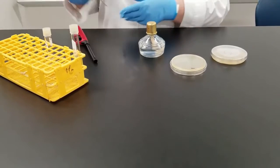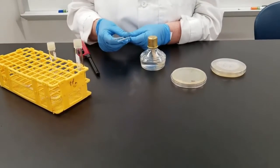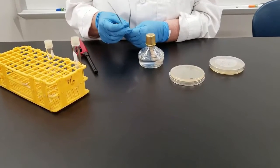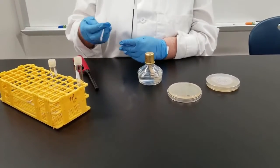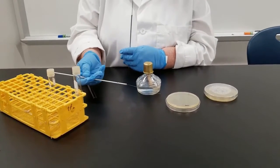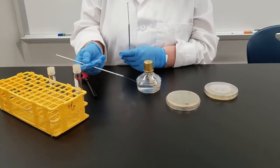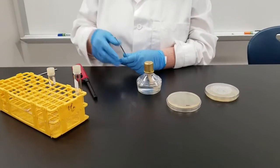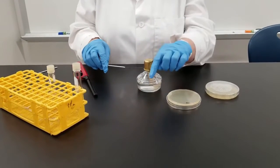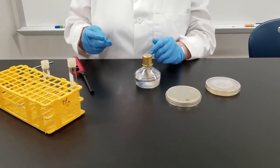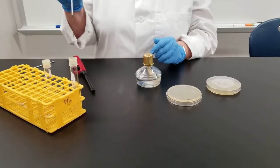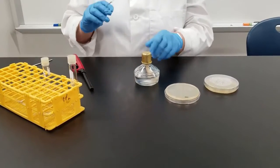Now we also have what we call our inoculating loops and needles. An inoculating needle is just a straight piece here. We don't use that quite as often. The thing we use most often will be the inoculating loop. As you can tell, it has literally a loop at the end, and we'll use this to touch the bacteria in one medium and transfer it to another.